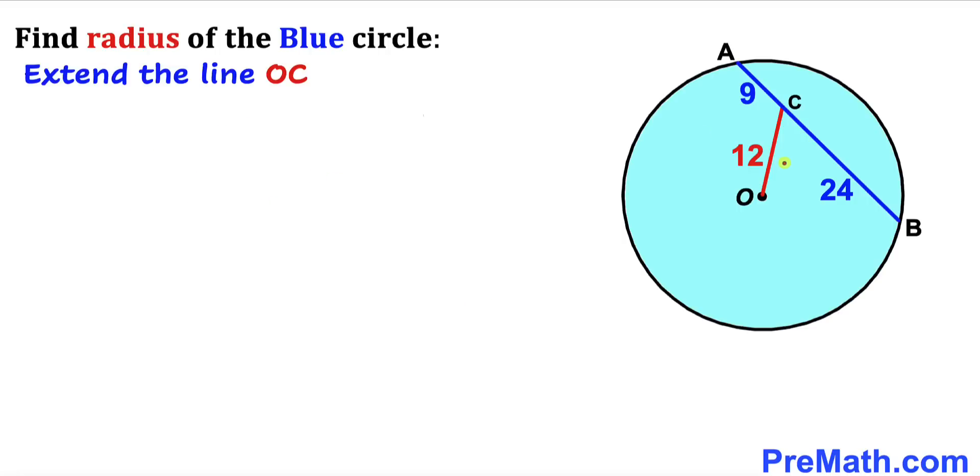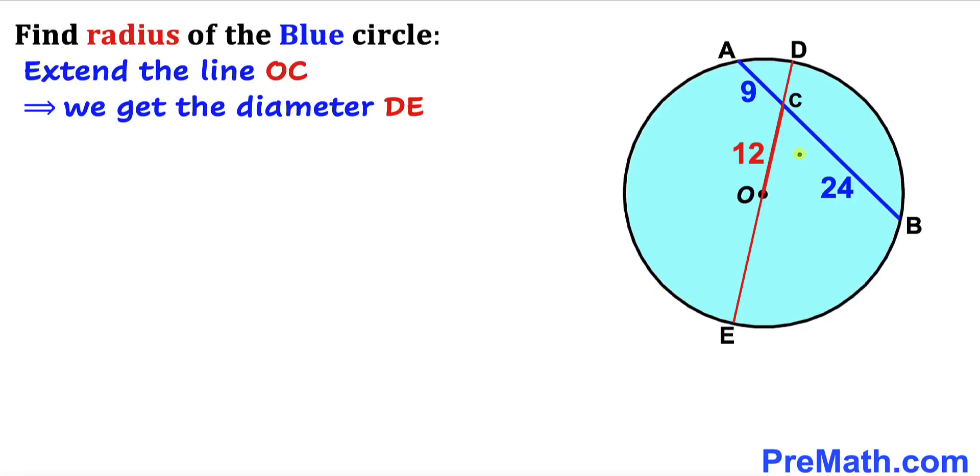Here's our first step. Let's extend line segment OC on this side and this side as well, as you can see in the next diagram. As a result we get DE as our diameter. Now we can see that OE is the radius of this circle. I'm going to represent this by lowercase r, and likewise DO is also the radius of this circle.